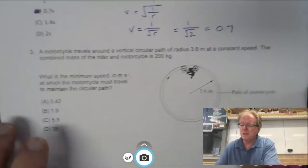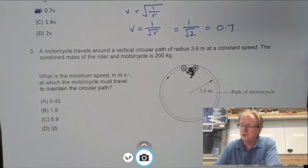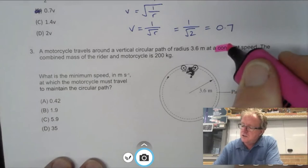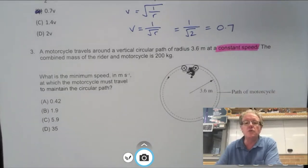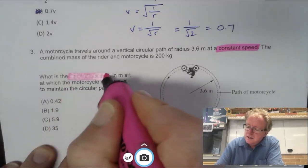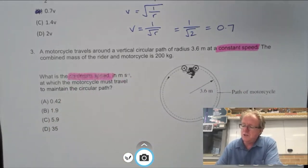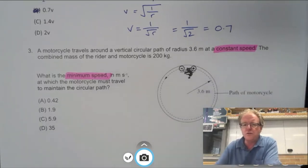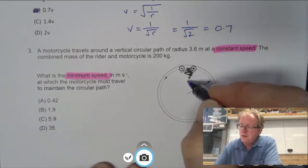Question 3 here. A motorcycle travels around a vertical circular path with a radius of 3.6 metres at constant speed, so it's undergoing uniform circular motion. The combined mass of the rider and the motorcycle is 200 kilograms. What is the minimum speed at which the motorcycle must travel to maintain this circular path? Let's look at the forces involved here.